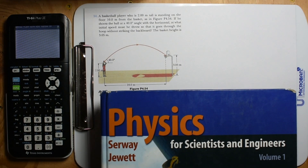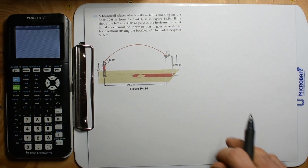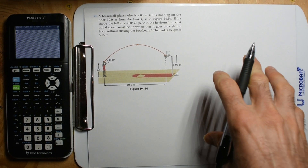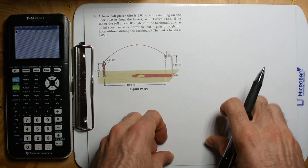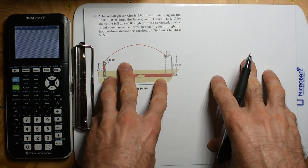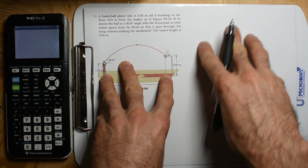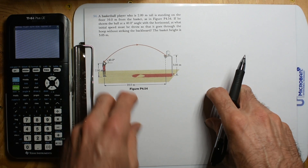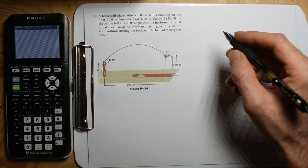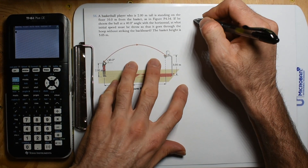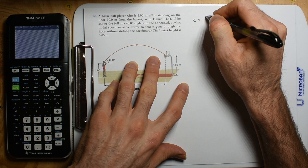We have a physics basketball problem, and we're going to solve it with just variables all the way to the end. What we're going to learn is that we end up with something that looks like a constant plus a x squared plus b x.